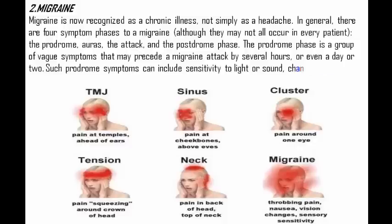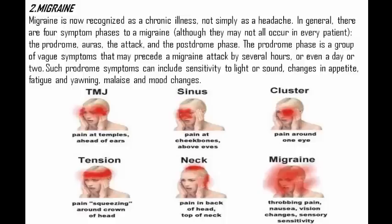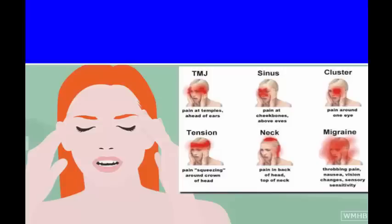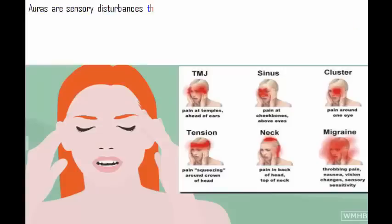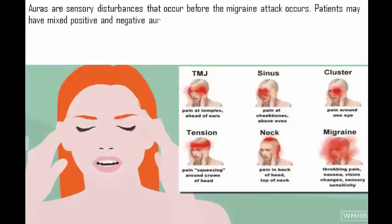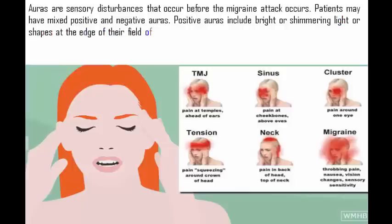Prodrome symptoms can include sensitivity to light or sound, changes in appetite, fatigue and yawning, malaise, and mood changes. Auras are sensory disturbances that occur before the migraine attack occurs. Patients may have mixed positive and negative auras. Positive auras include bright or shimmering light or shapes at the edge of their field of vision, called scintillating scotoma, which can enlarge and fill the line of vision.